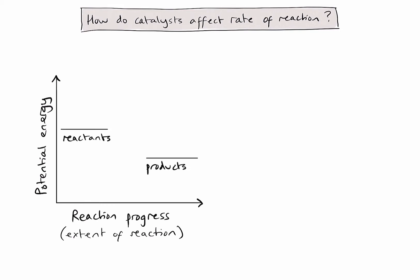To break the bonds in the reactants, we must first see an increase in potential energy in the system before reforming bonds, and therefore a decrease in potential energy. The height of the initial increase in potential energy required to break the bonds is known as the activation energy. If colliding reactant particles have less kinetic energy than the activation energy required, then no reaction will happen.